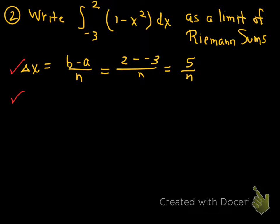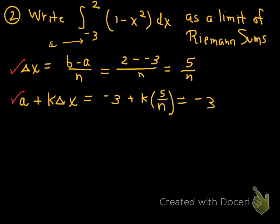Second step. I've got to find a plus k delta x. And remember, the a comes from right there as a lower limit. a plus k delta x in this case is going to equal negative 3 plus k times what you found in step 1. And then rewrite that, multiply that, do the product there of the second term. Negative 3 plus 5k over n. Done with step 2.